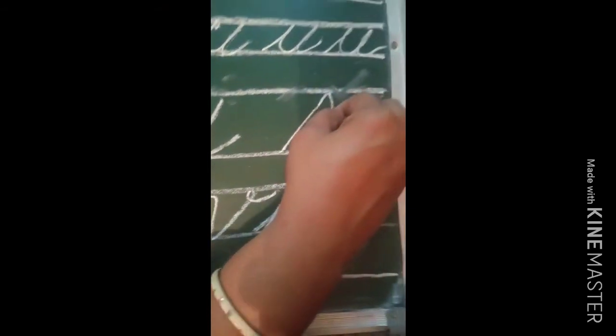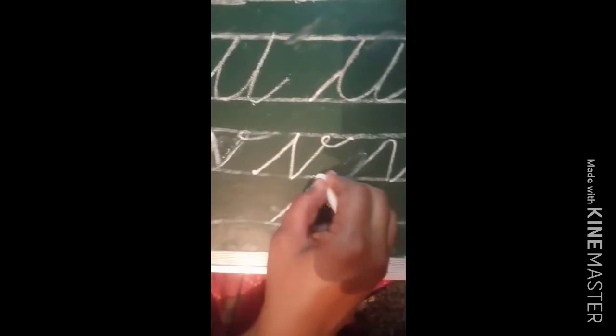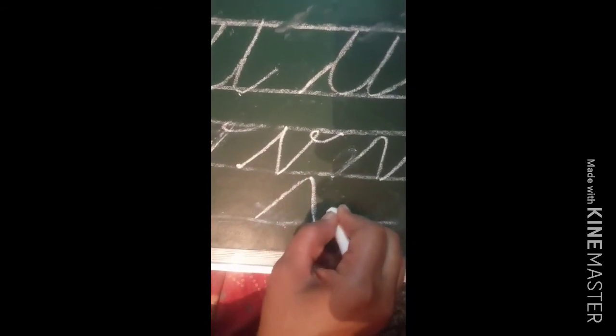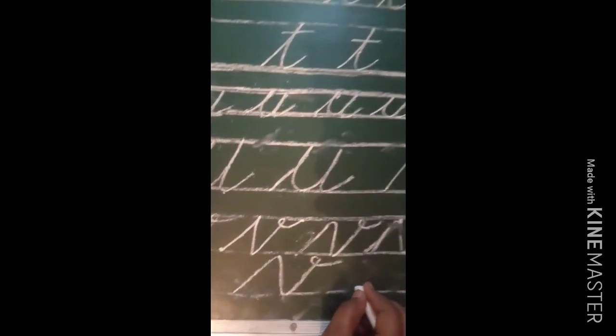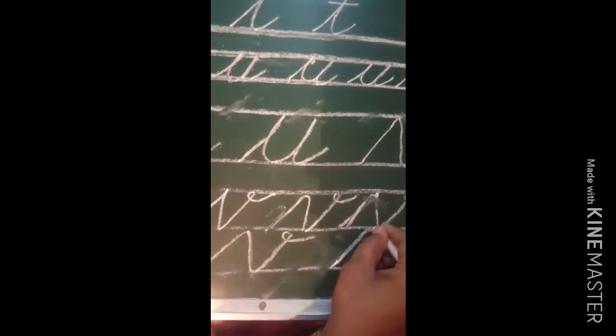Now we will make letter V: go upside, come down, go upside, make a turn — letter V. Again: go up, come down, go upside, make a turn — letter V. Again: go up, come down, go upside, make a turn — letter V. So these are the letters: letter T, letter U, letter V. Today you will practice these letters. Bye bye!